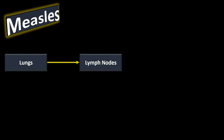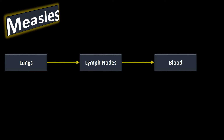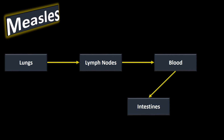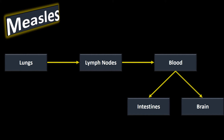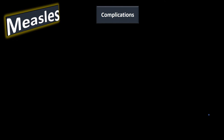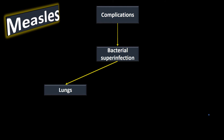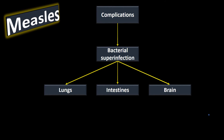Measles primarily infects the lungs — that's its route of entry. From the lungs it multiplies and moves into the lymphatic system and lymph nodes, then into the blood, and from the blood it travels to the intestines and to the brain. This pathway helps us understand why we get certain complications. Because the immune system is working hard, we're more prone to getting a bacterial superinfection in the lungs, intestines, or brain.